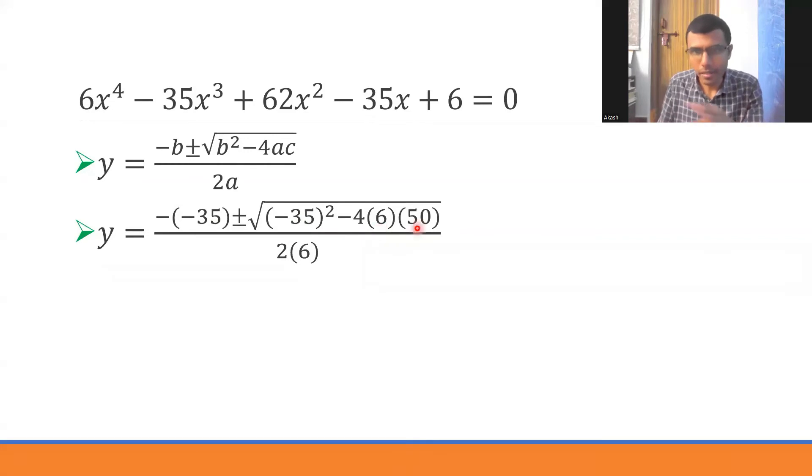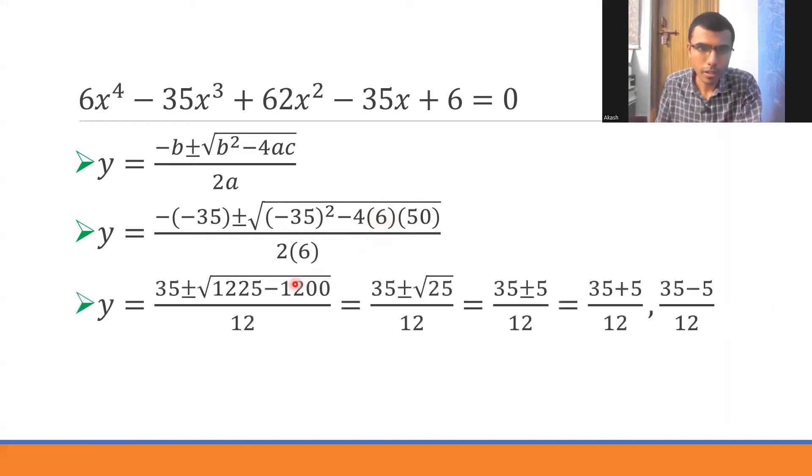What is 4 times 50? 200. 200 times 6? 1200. So ultimately you would be left with 35 ± √(1,225 - 1,200).